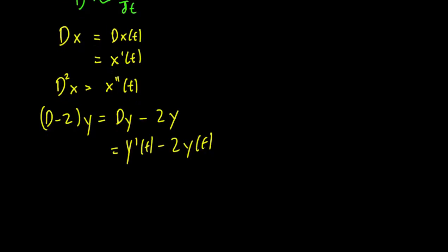And we can distribute the other way as well. For instance, Dx - 3y is going to be equal to Dx - 3Dy. So this is going to be x'(t) - 3y'(t).